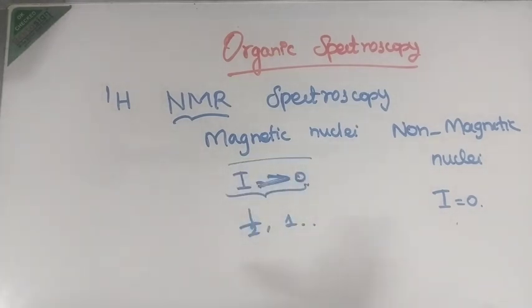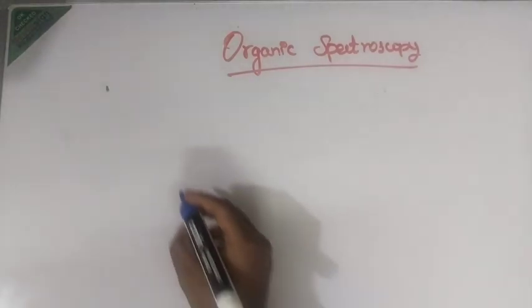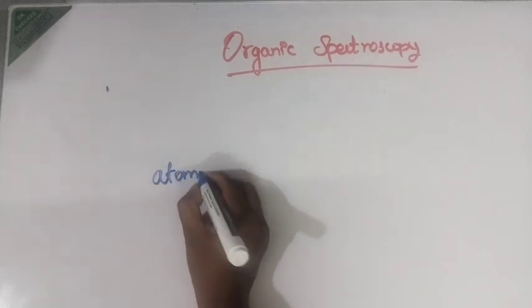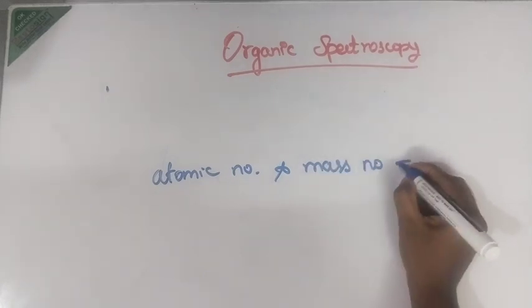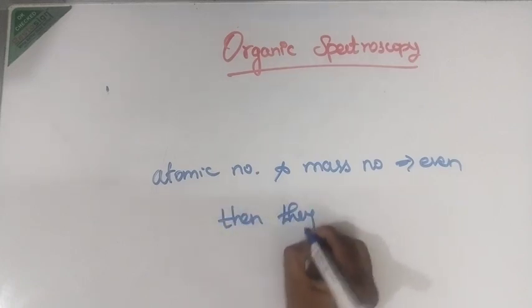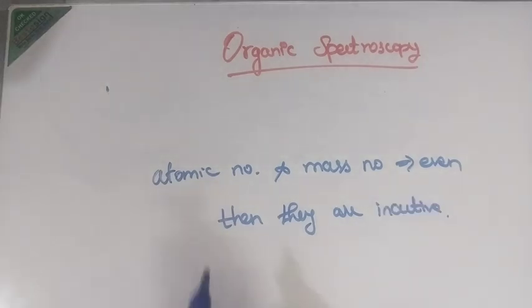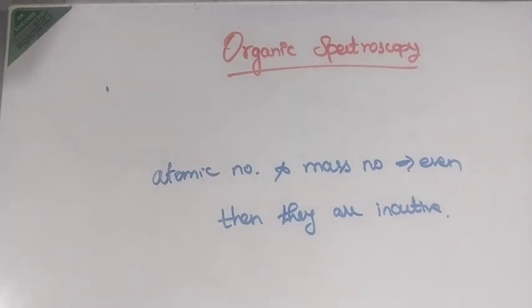Magnetic nuclei are all active. I value is greater than 0 for magnetic nuclei. This is a very basic introduction on how to find out which molecules are active and which are non-magnetic or magnetic. If the atomic number and mass number — both — are even, then they are NMR inactive.